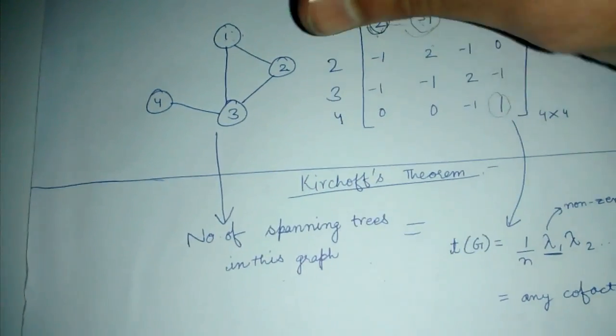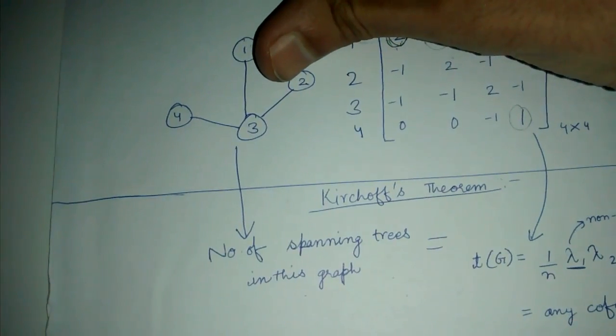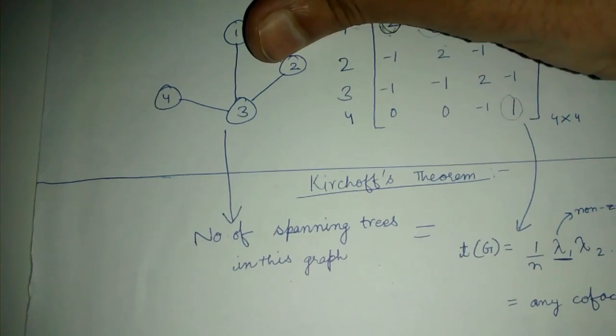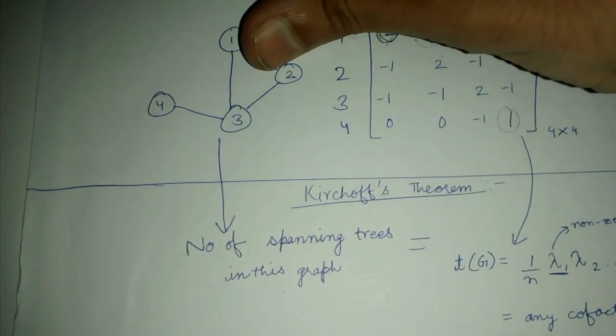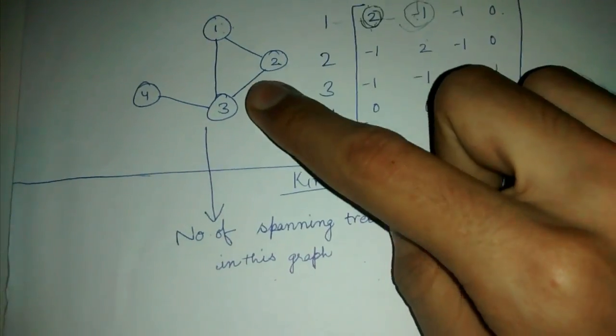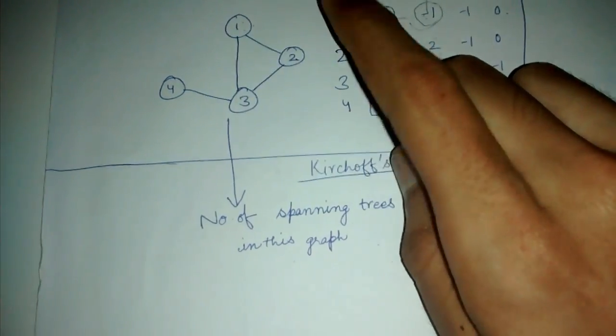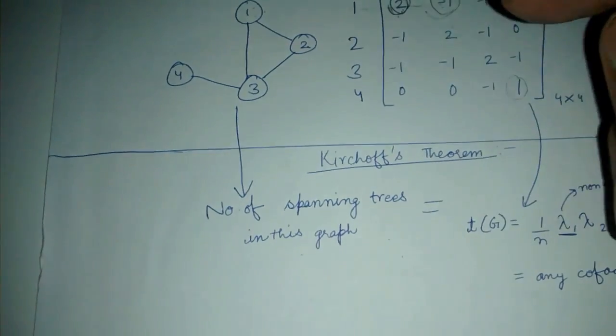So if we consider this subset of the edges, only these three edges, then we can see that it is forming a tree. There is no cycle in this. Hence this is a spanning tree. Similarly for this subset also. So these are examples of spanning trees of this graph.